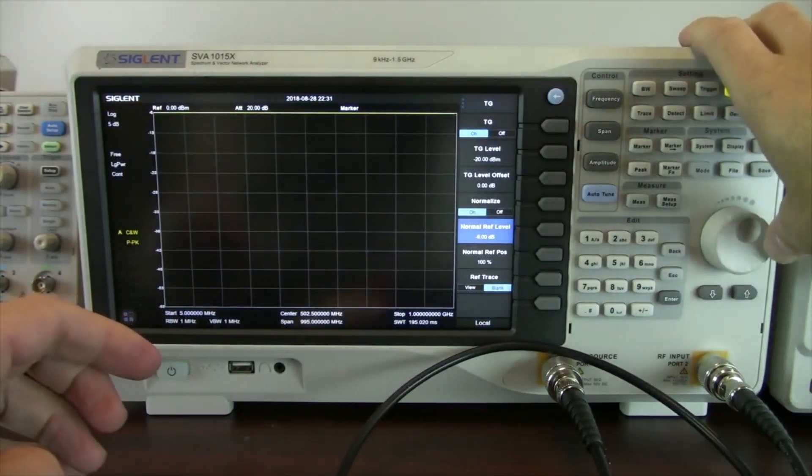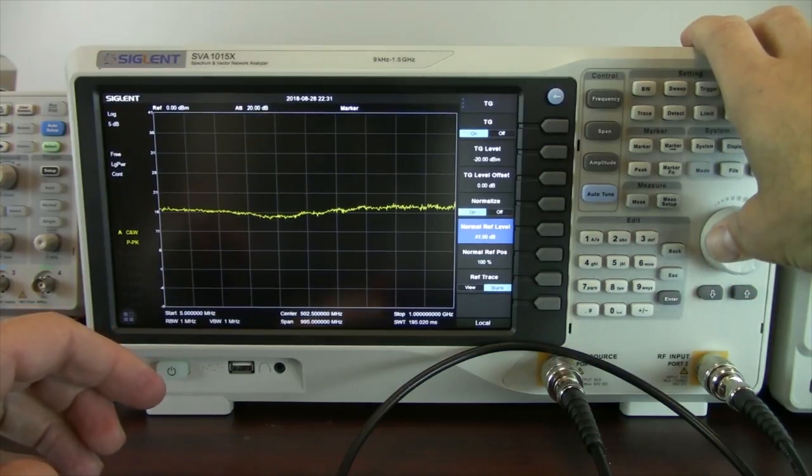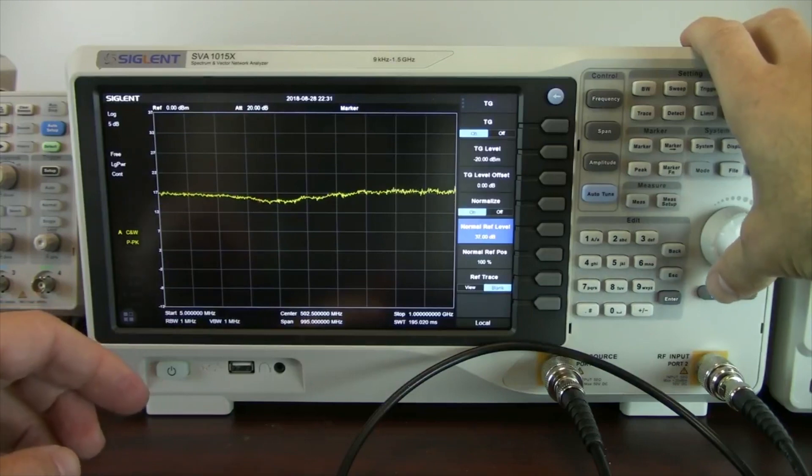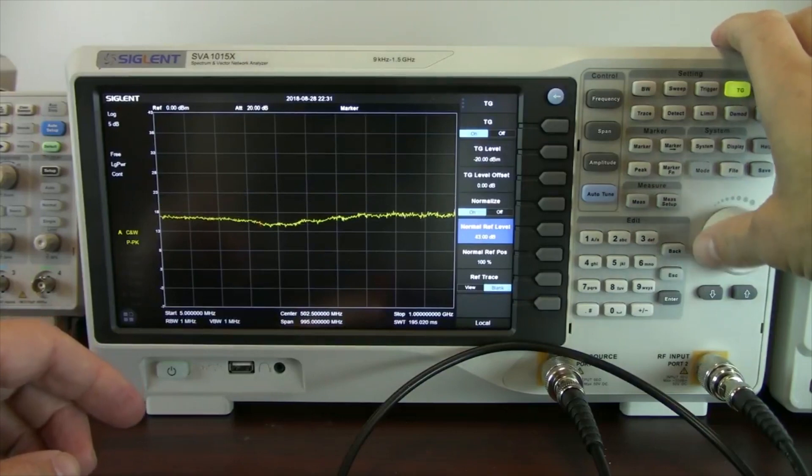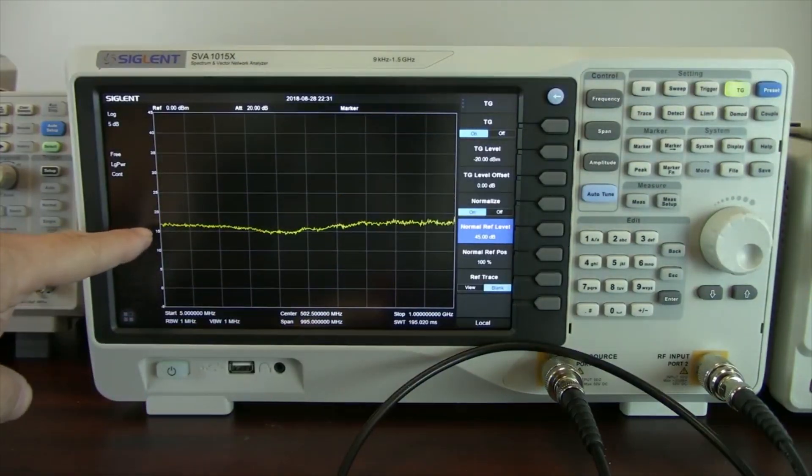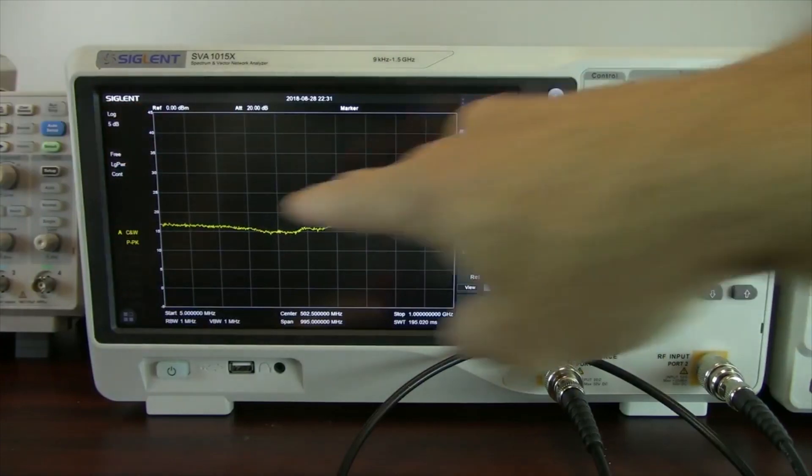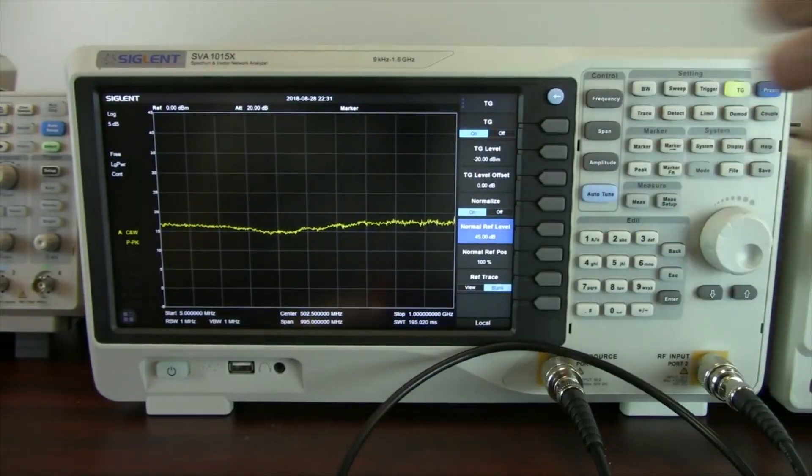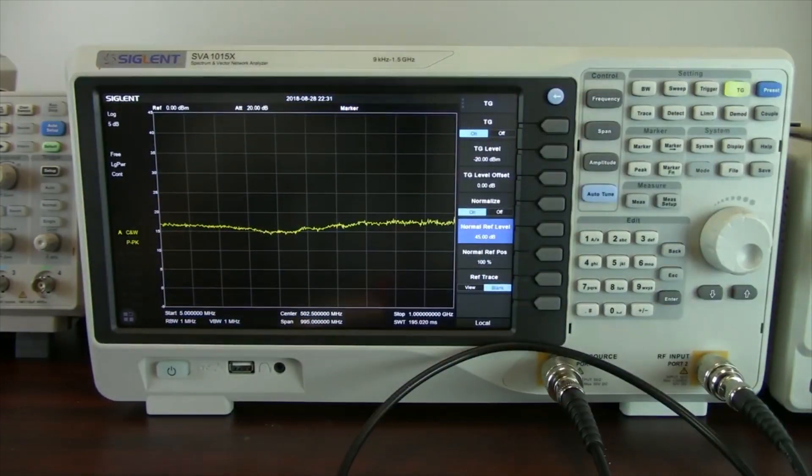Now I'm going to change our reference level. We'll bring 0 towards the bottom here. Just trying to get it lined up. So now we've got 0. We've got 17 or so. This curve represented here, which is around 17 dBm, is the amplification curve for this amplifier at 12 volts from 5 megahertz up to 1 gig.